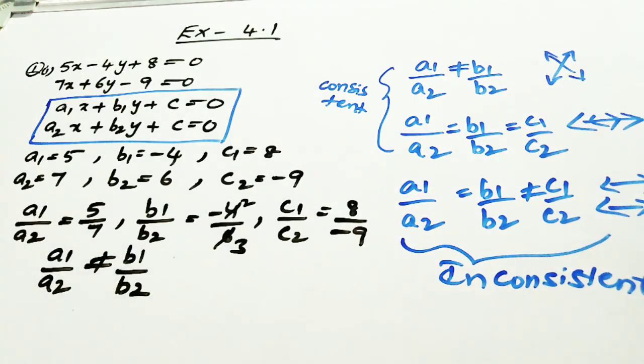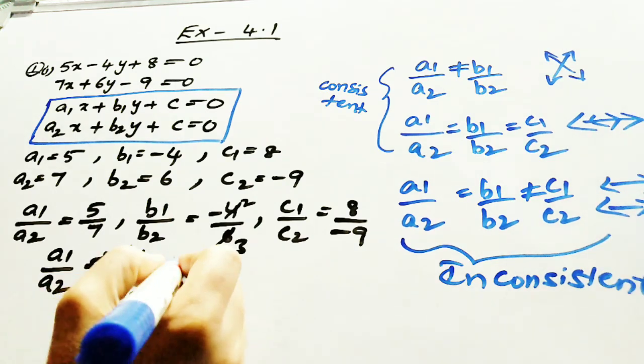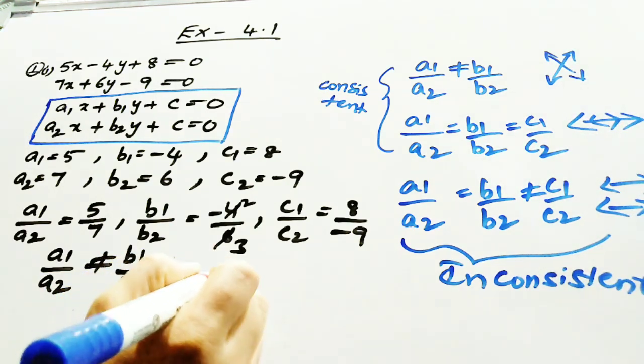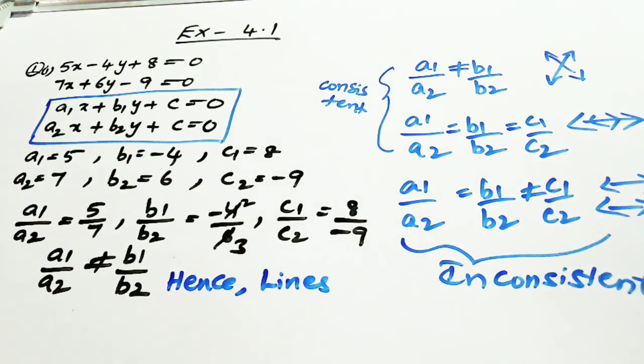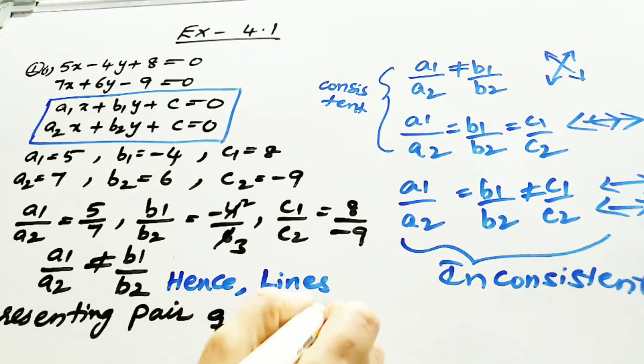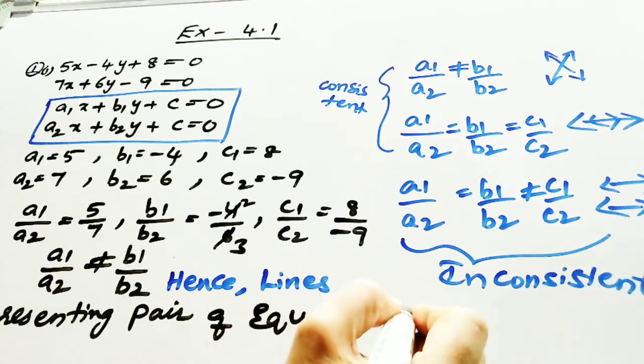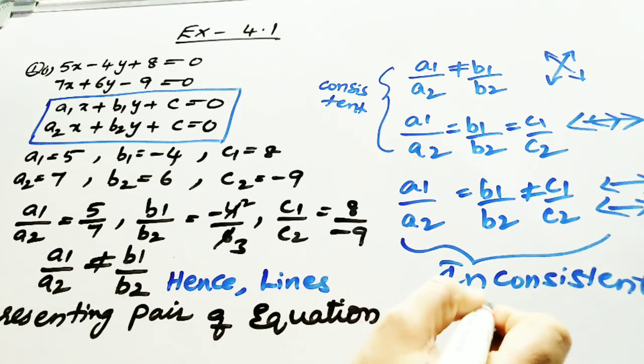Since a1 upon a2 is not equal to b1 upon b2, it is a consistent pair of linear equations. Hence, lines representing pair of equations intersect. It is a consistent pair of linear equations.